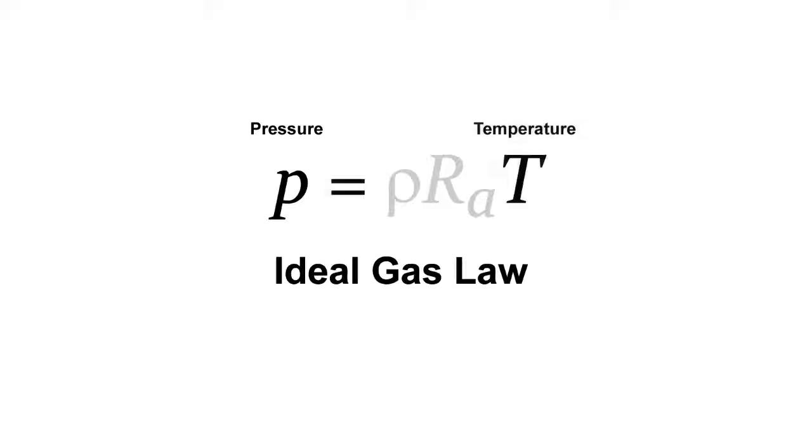The ideal gas law relates pressure, temperature, and density or amount of gas and volume. So if you have two of those three, you can calculate the other one. If you have temperature and density, you can calculate the pressure.